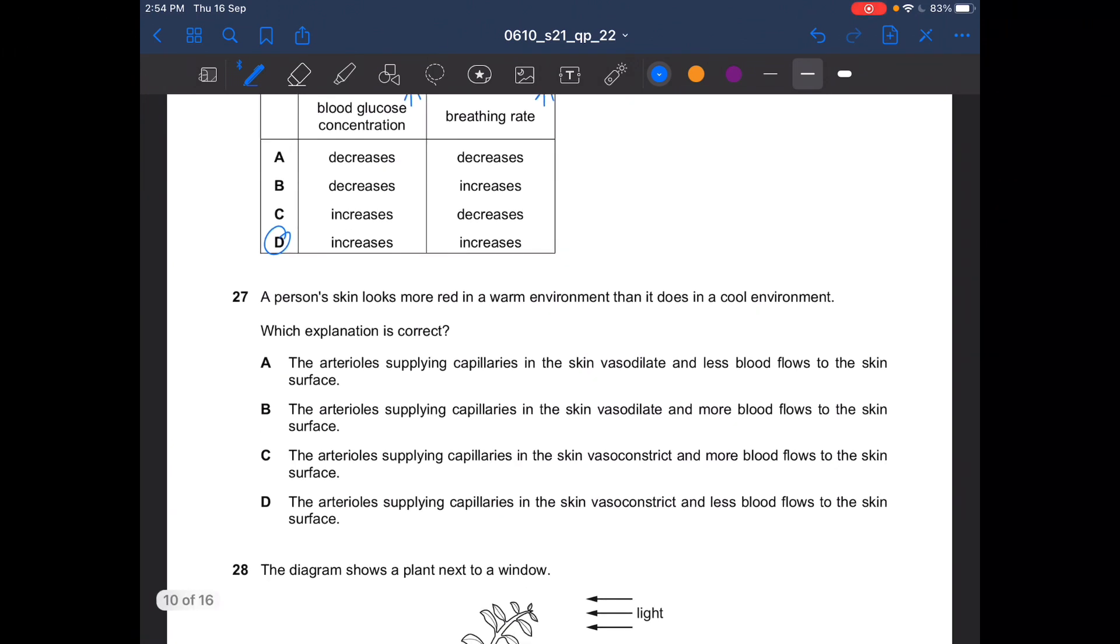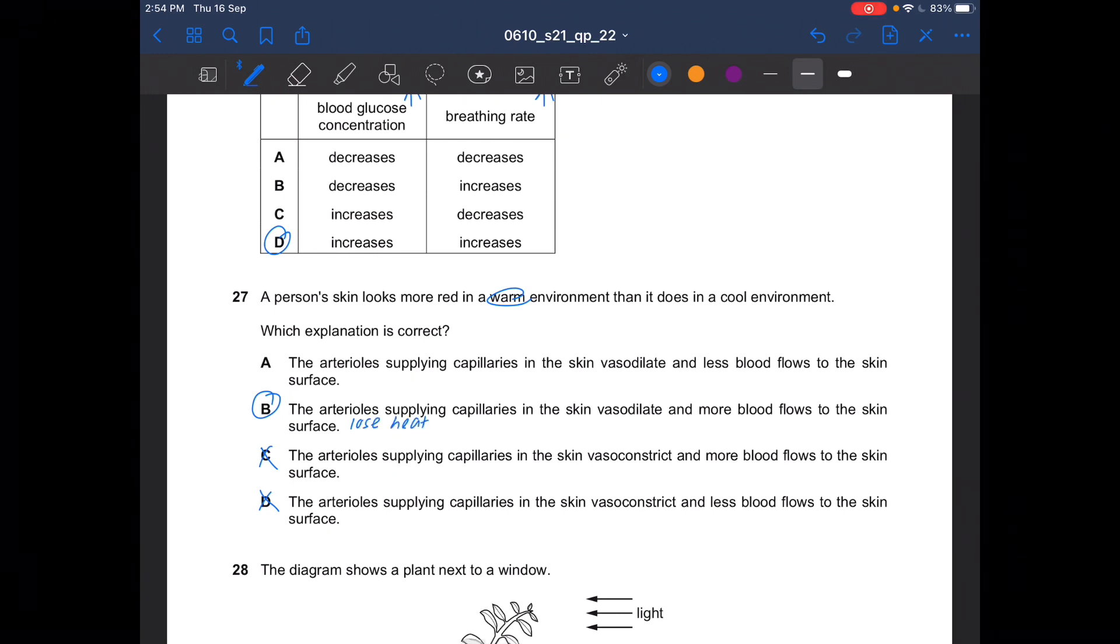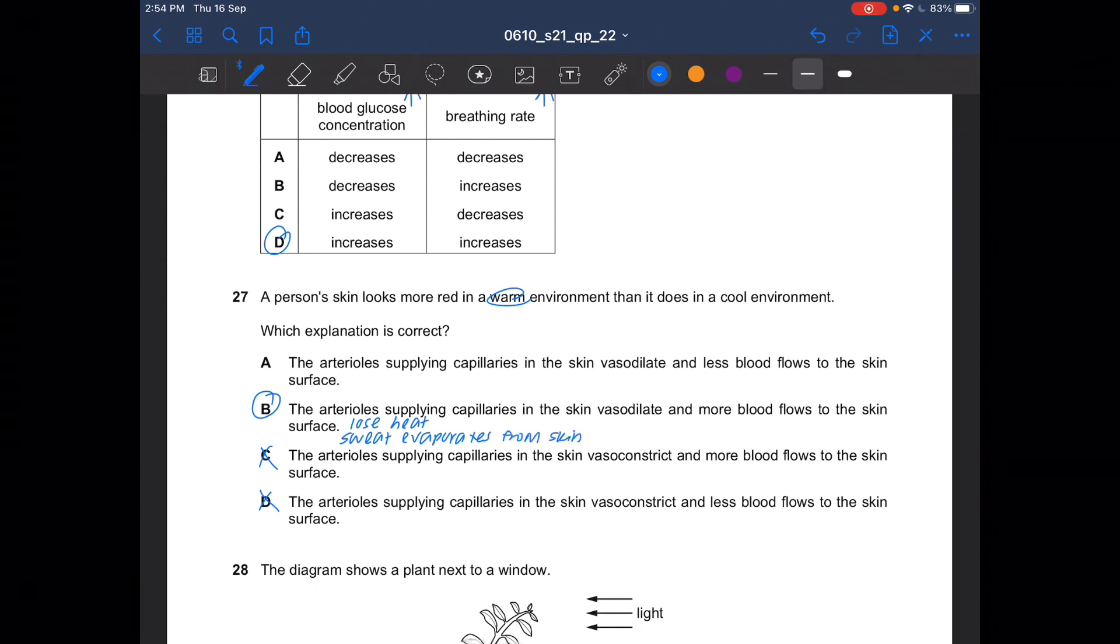Next question. A person's skin looks more red in a warm environment than it does in a cool environment. Which explanation is correct? In a warm environment, the arterioles would dilate. So vasodilation occurs. And hence, more blood will flow to the skin surface. And then they will lose heat. Sweat would evaporate from the skin surface and hence, cooling it. This is homeostasis.